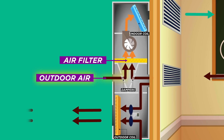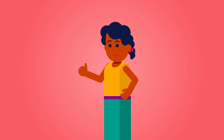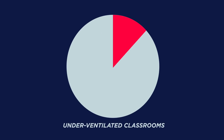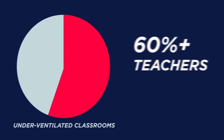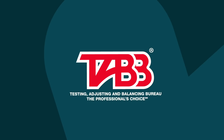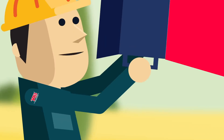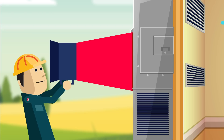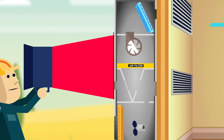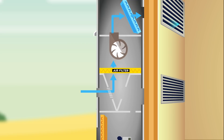How do you know if a classroom is getting enough ventilation? You may think that teachers can detect a problem, but most cannot. In a recent study where teacher surveys were compared to ventilation rates, over 60% of teachers in underventilated classrooms reported that their satisfaction with their indoor air quality was neutral or satisfied. In order to know if a classroom is well ventilated, the HVAC system's ventilation rate must be measured and, if necessary, adjusted to meet the classroom requirement. This should be done by trained, qualified, and certified personnel.